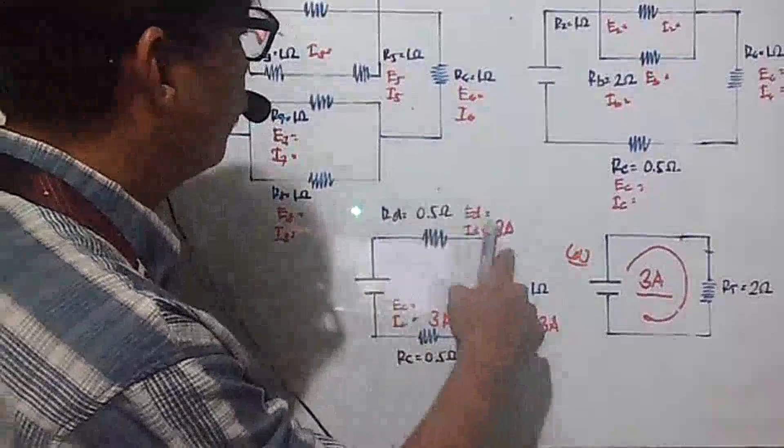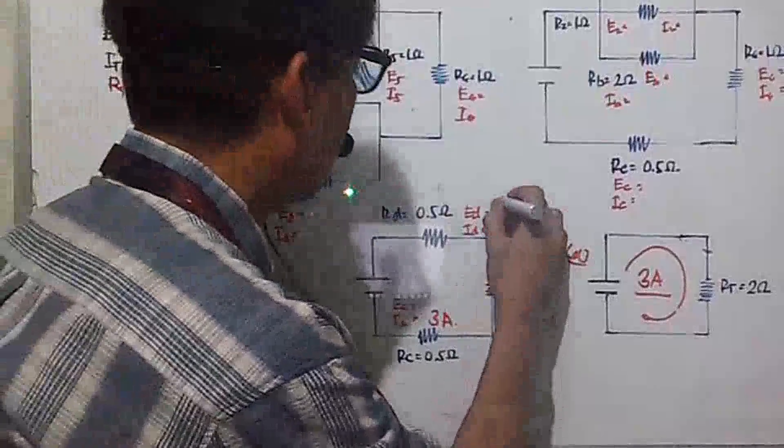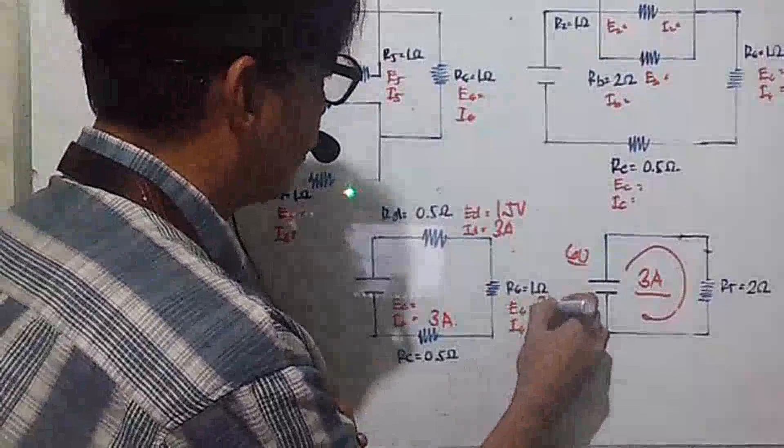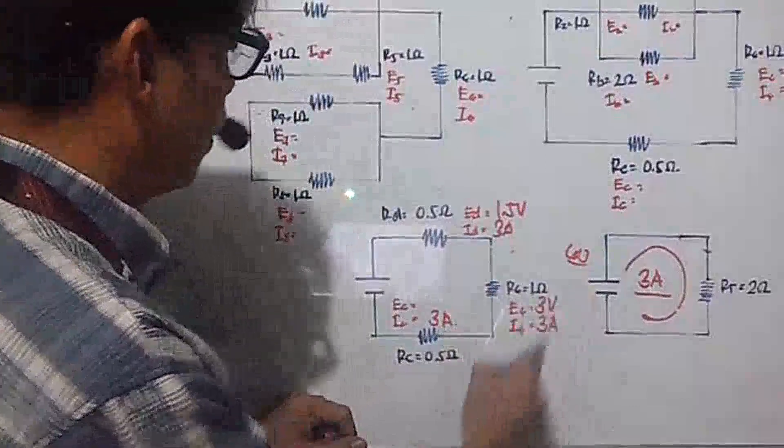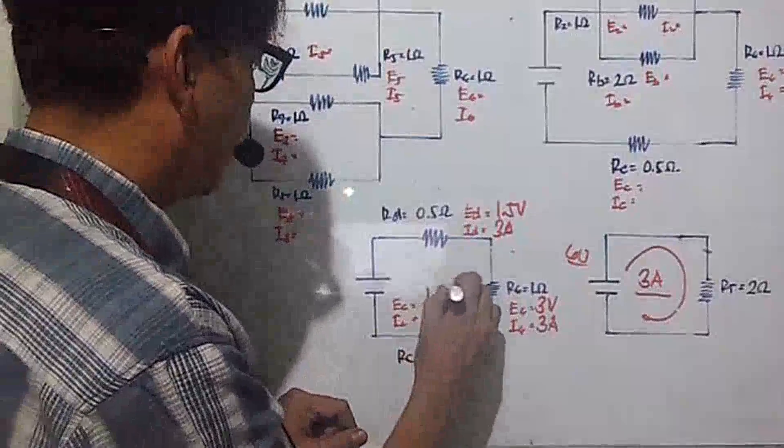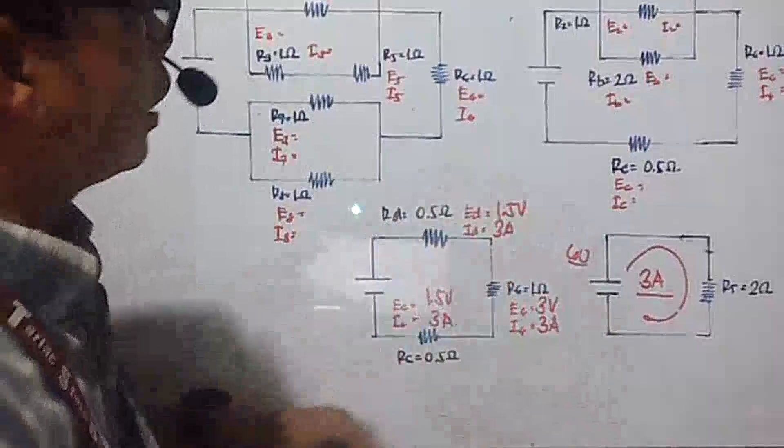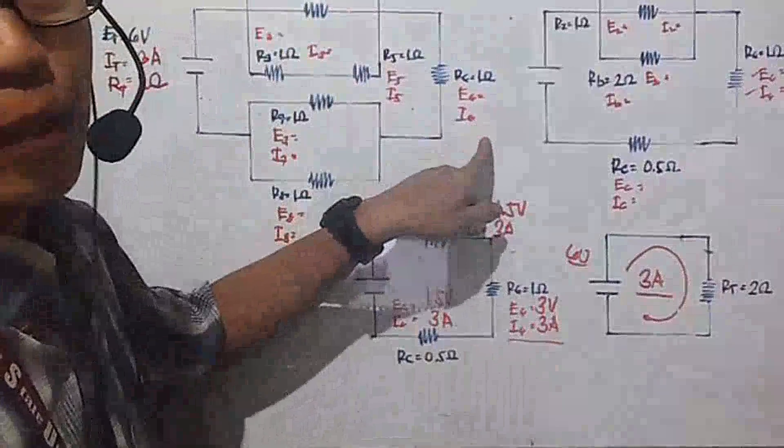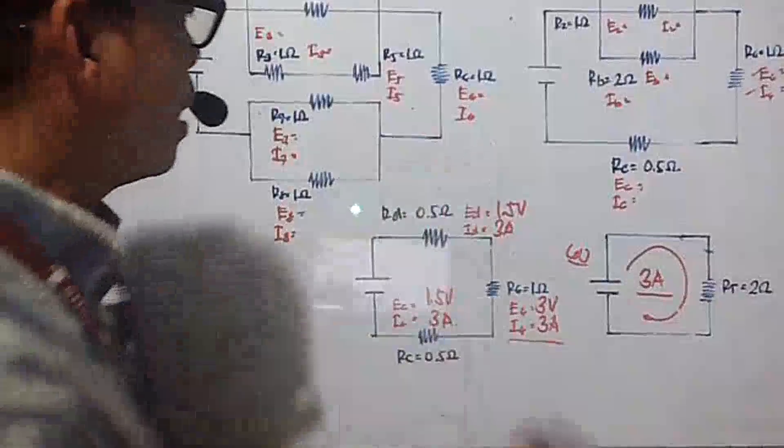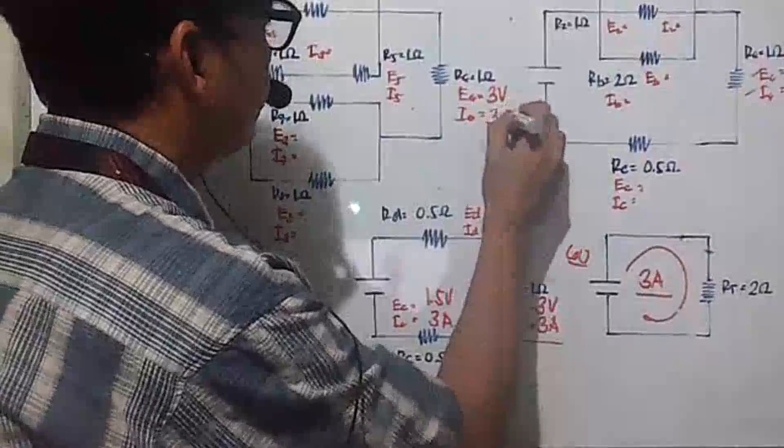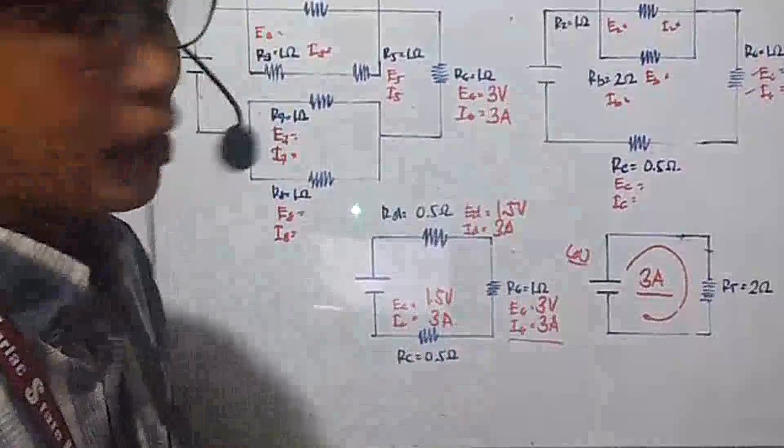You're given now the value for resistances and your value for current, so you can solve for the voltages. For ED, you have 0.5 multiplied by 3, so you have 1.5 volts. Here, it is 3 volts. It is 3 times 1, so you have 3 volts. And finally, 0.5 or one-half multiplied by 3, it is 1.5 volts. So this part is complete. We have R6, you don't have to write it here yet. We could write it in our main problem. So your voltage is 3 volts and your current is 3 amperes.